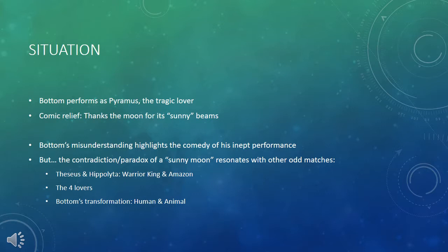But there's something more going on than just the joke. This contradiction — the paradox of a sunny moon — resonates with other odd pairings throughout the play: Theseus and Hippolyta, the warrior king and Amazon queen at odds yet getting married; the four lovers and all their magical transformations; and Bottom himself, transformed into both human and animal at once. It's a contradiction, a paradox — just like the sunny moon. So Bottom's comic use of moon informs and underlines the more serious uses of the moon throughout the play.